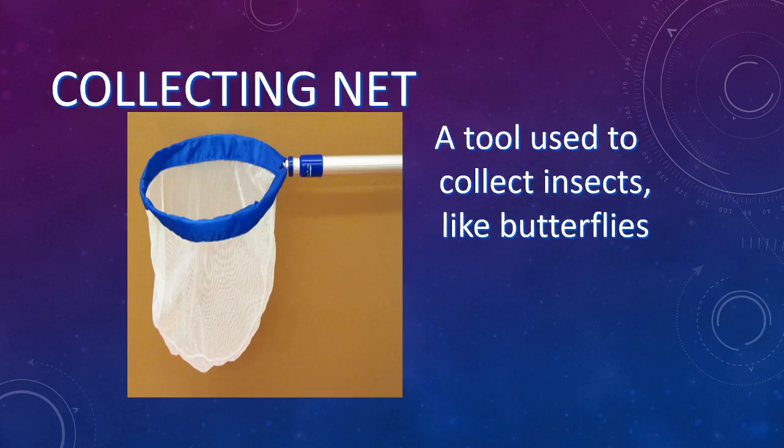A collecting net — we might use these more in environmental science so that we can go outside and collect different specimens like insects, butterflies, or other things like that.